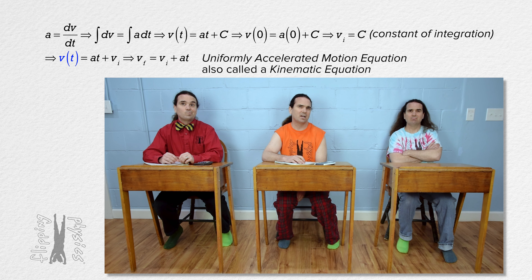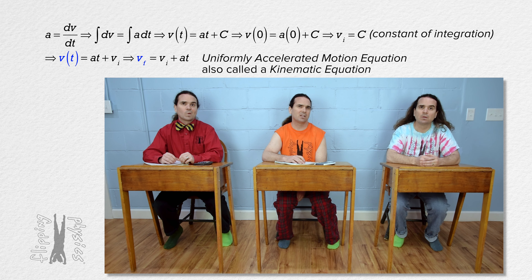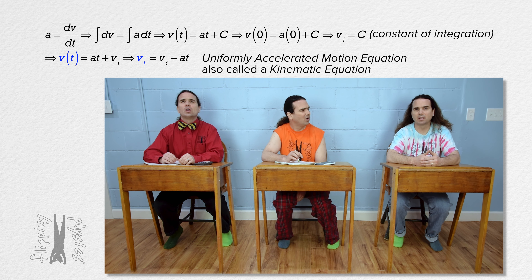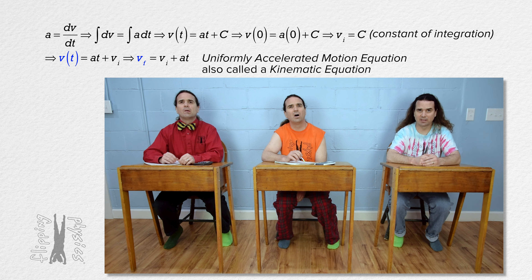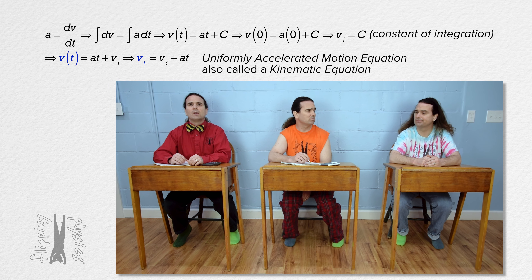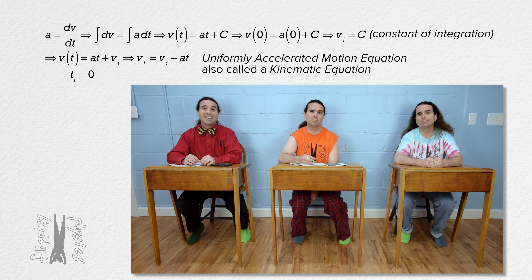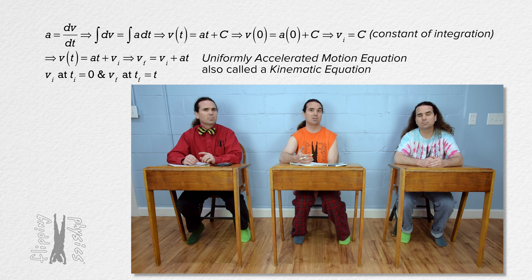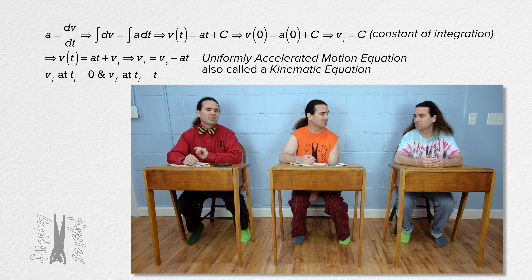How did velocity as a function of time become velocity final? Well, when you plug a time into the velocity as a function of time equation, you get a velocity at that time, which is exactly what velocity final is. So the initial time is zero and the time final is time t. The initial velocity is at time equals zero and the final velocity is at time equals t. That makes sense. Thanks. You're welcome.